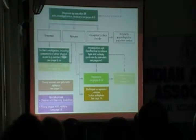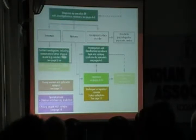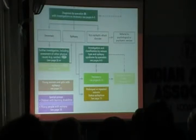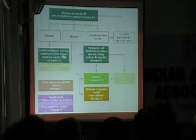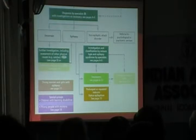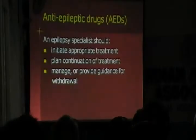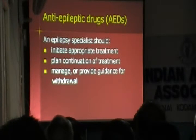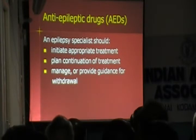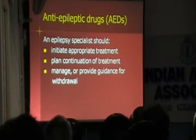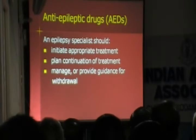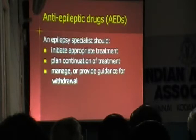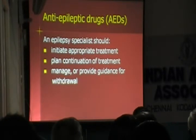There are some special groups — young women and girls with epilepsy, children with learning difficulties, and young people. In general you need to make sure you deal with them appropriately. Children with special needs would need a multi-disciplinary team — psychologist if required, occupational therapist, physiotherapist if they are already involved — as these children usually have some kind of co-morbidities. Regarding anti-epileptic drugs, you should initiate the appropriate treatment, plan the continuation with the patient, and manage and provide guidance for withdrawal. In general for children, after two to three years of a seizure-free period on medication, you can probably plan to withdraw the medication gradually and stop it.